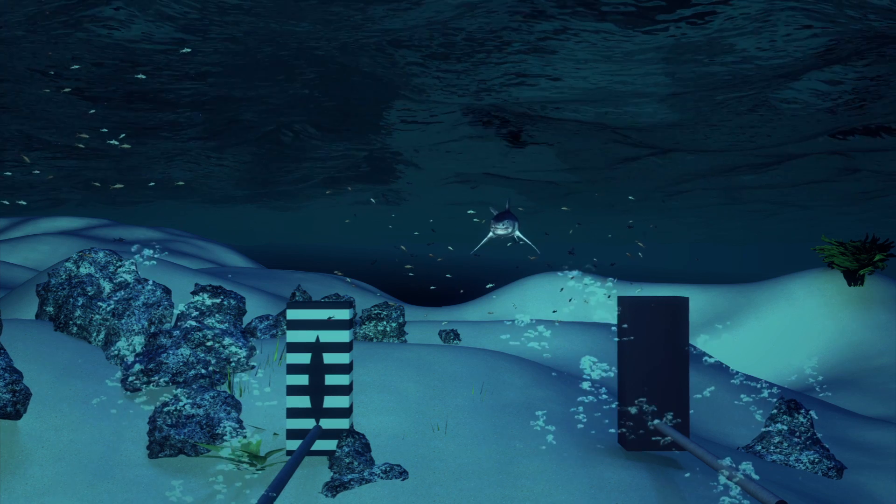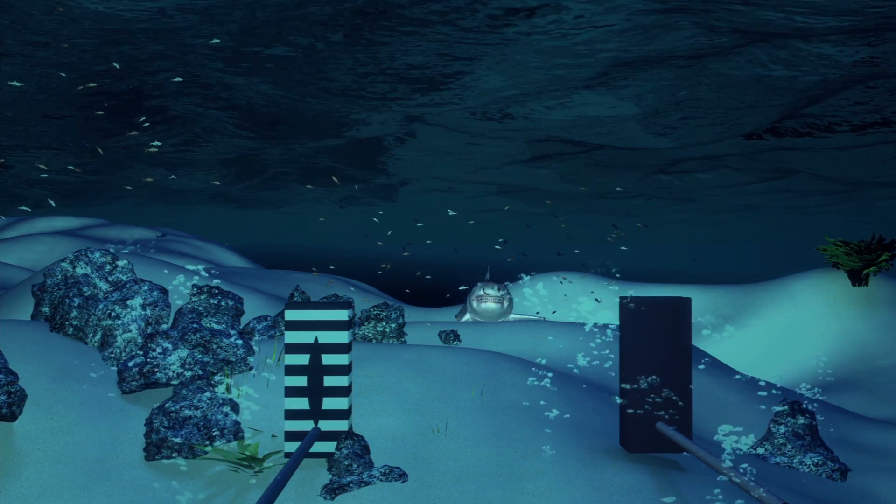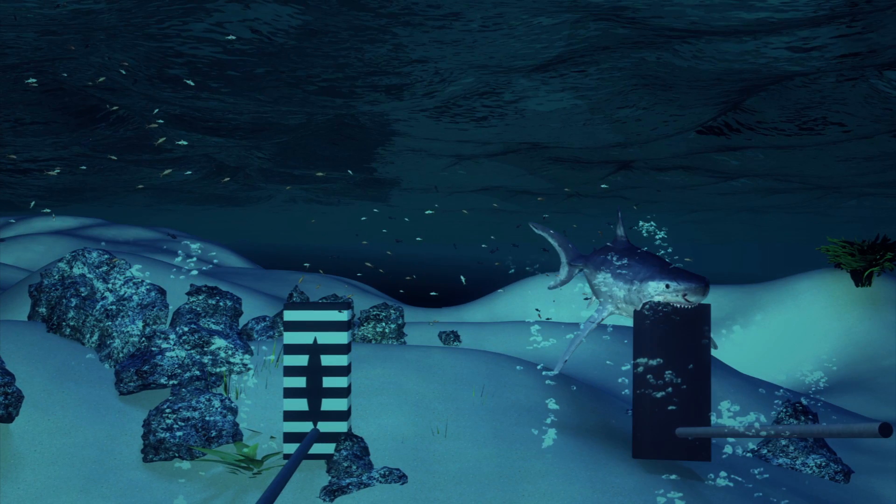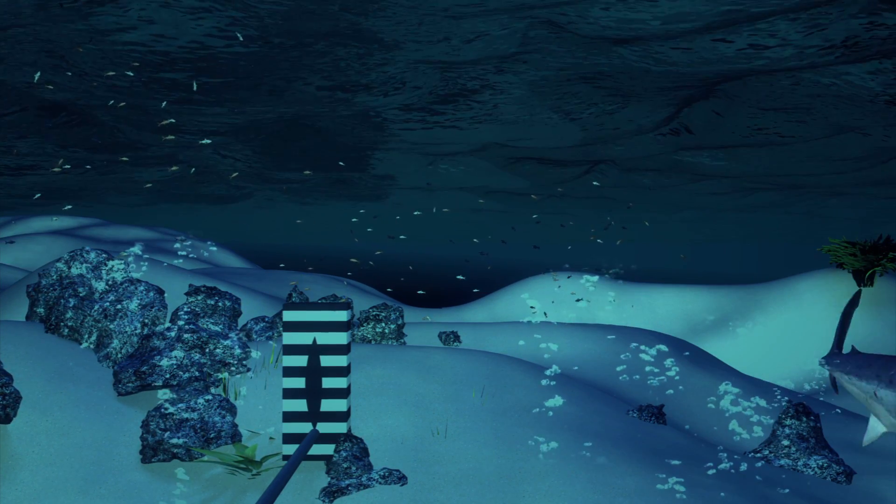In tests, sharks steered clear of the black and white striped test object, but would hone in on the all black object resembling the traditional all black wetsuit.